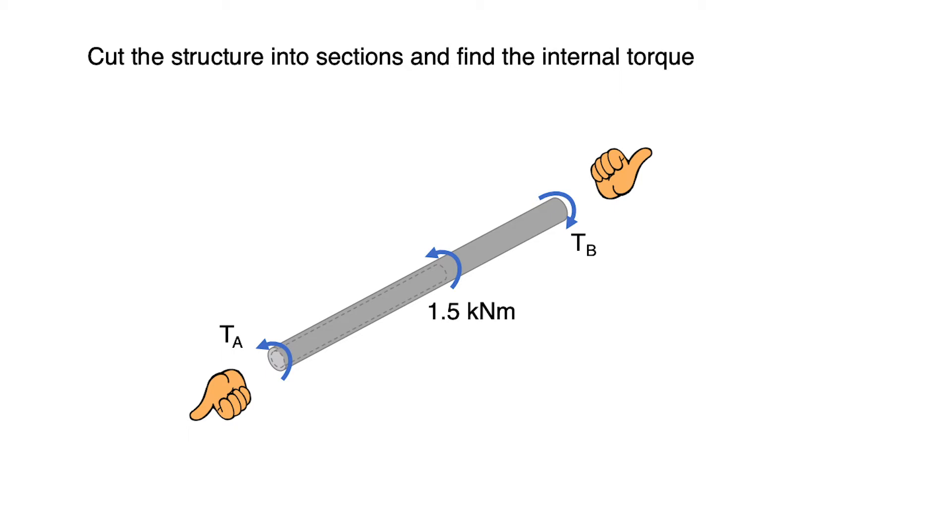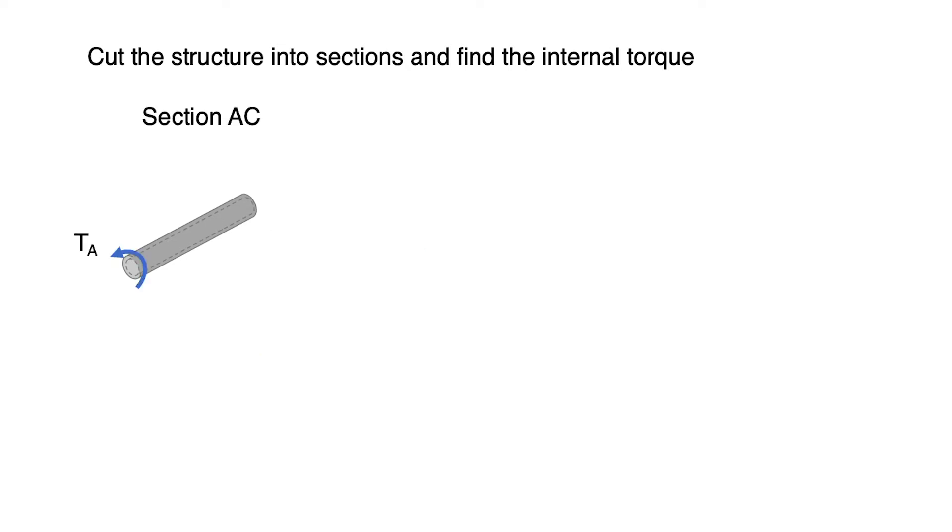Next we cut the structure into sections and find the internal torque. We have two sections here, section AC and section CB. You can cut sections either from A or from B; both will get the same final result. Let's say I cut it from A. The first section will be section AC.